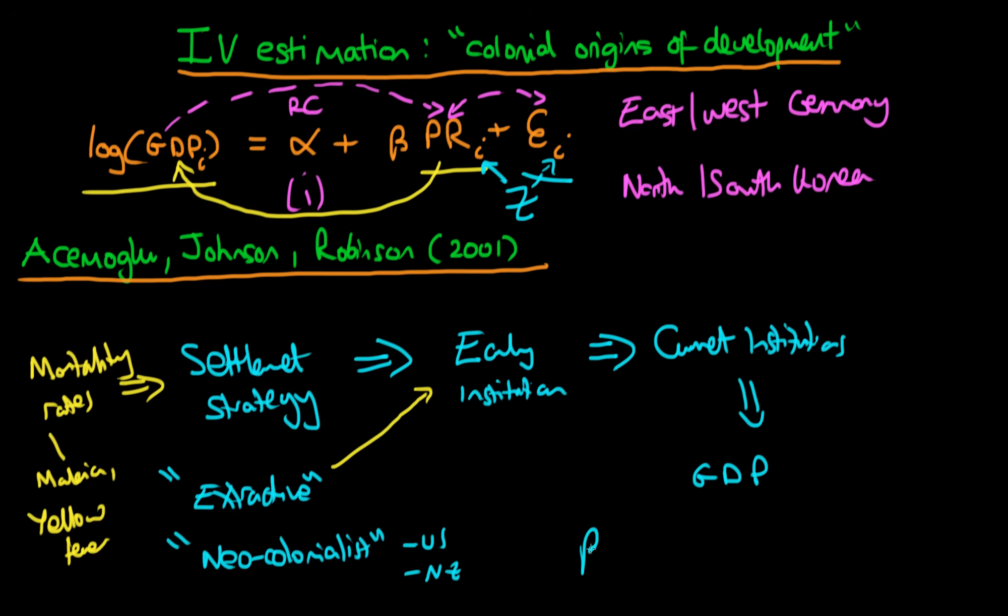What the researchers found is that they found a positive and significant effect of institutions, property rights, on GDP when they used this mortality rate variable as an instrument. That obviously contrasted with efforts to estimate this relationship via OLS because of the confounding effects of the reverse causal effect and the fact that there are these omitted factors which weren't being controlled for.